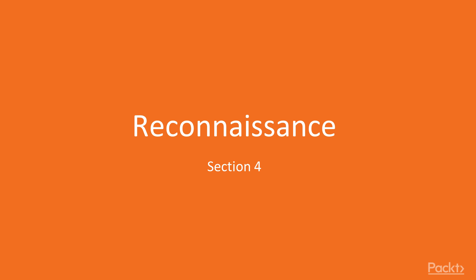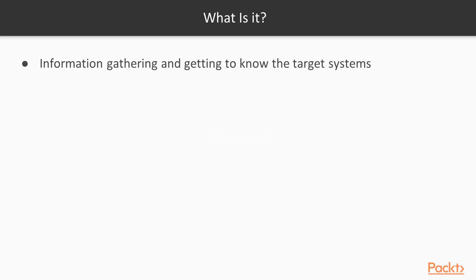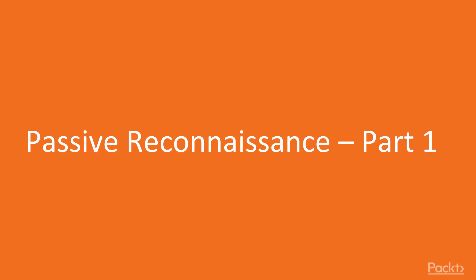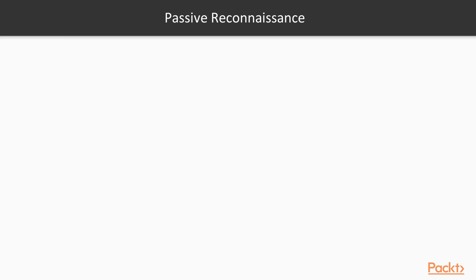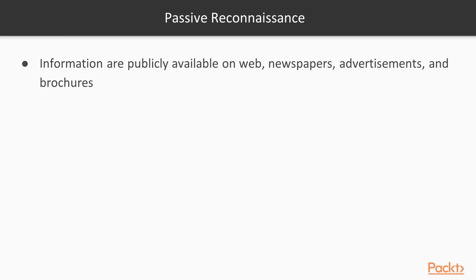Thank you for watching the next video of the Learning Kali Linux video training series. In this section we're going to talk about reconnaissance, which is the first step of the ethical hacking process. Reconnaissance refers to gathering information and getting to know the target systems. There are basically two types: passive and active. We're going to start with passive reconnaissance, which uses techniques and methods that are non-intrusive — not really touching the target devices or assets.